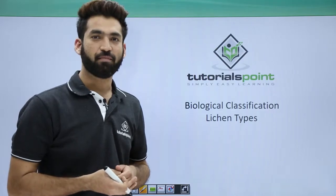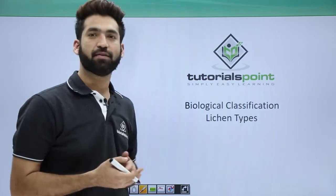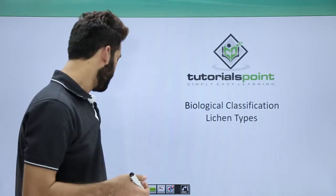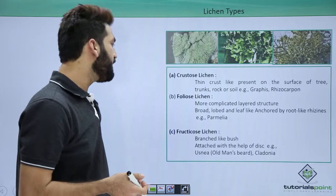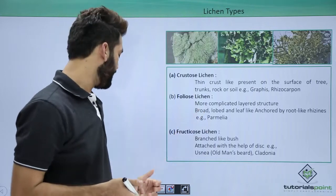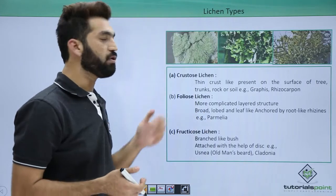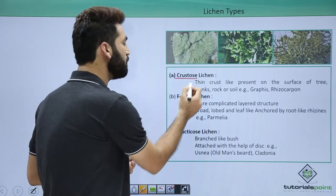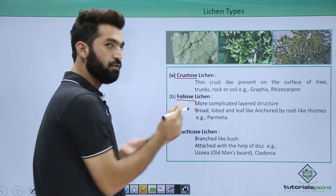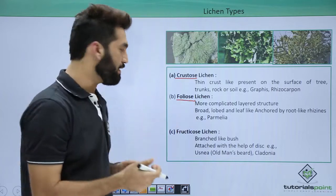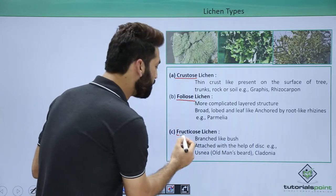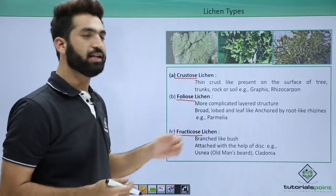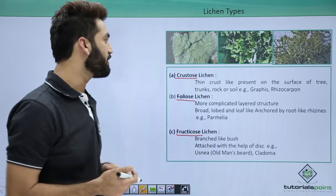In this session we'll be talking about different types of lichen based upon morphology. There are three different types of lichen based upon morphology: they are crustose, they are foliose — foliose means leaf-like — and fructicose. We'll be discussing about these three lichens.